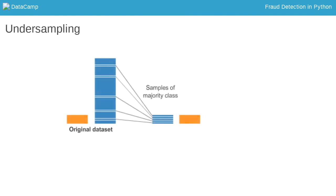The most straightforward way to adjust the imbalance of your data is to undersample the majority class, a.k.a. non-fraud cases, or oversample the minority class, a.k.a. the fraud cases.